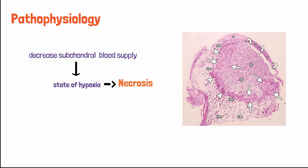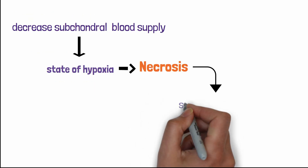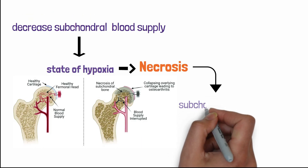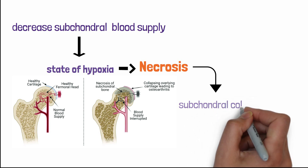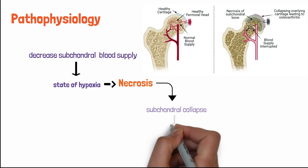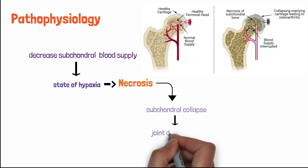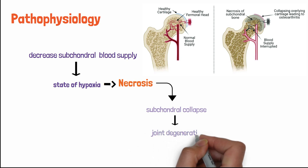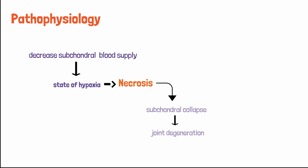Because of necrosis of the femoral head, there is subchondral collapse, which leads to formation of osteophytes — a process called joint degeneration. This results in restriction of the range of motion, pain upon abduction and internal rotation, and tenderness to palpation of the hip region.